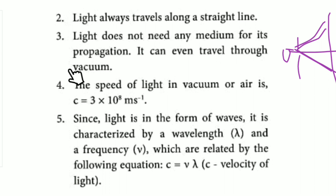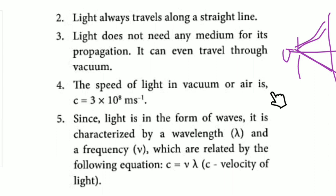Light does not need any medium for its propagation — it can even travel through vacuum. Unlike sound, which cannot travel through vacuum, light can. The speed of light in vacuum or air is c, equal to 3 × 10⁸ meters per second.